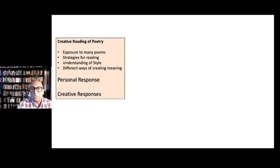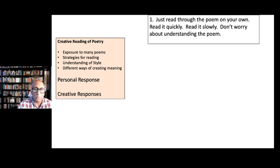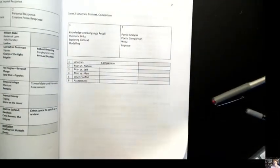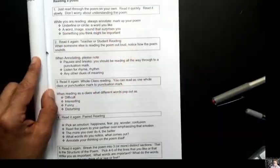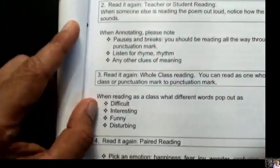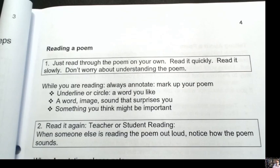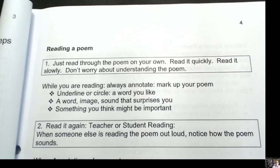So what does the creative reading of poetry mean? What do we do? The first thing I want you to think about is just actually reading through the poem. Whenever you get to a poem, you read through it quickly, and then you read through it slowly. Don't worry about understanding — this first step is always missed by students. They think there's some other magical thing they're supposed to be doing. Whereas actually, the best thing you could do is to just read through the poem: read it quickly and then read it slowly. Don't worry about understanding it.